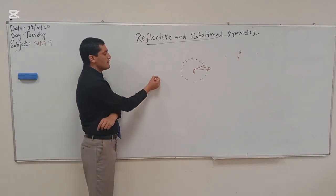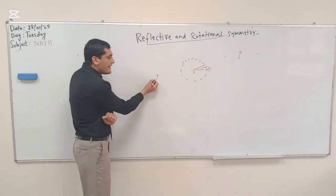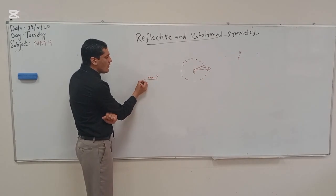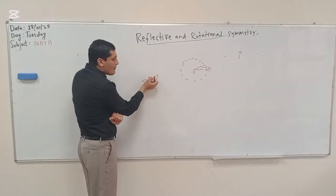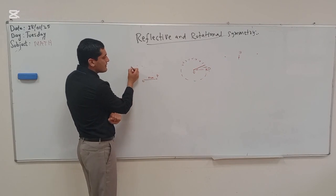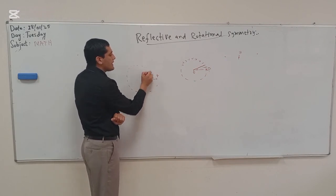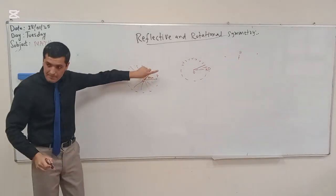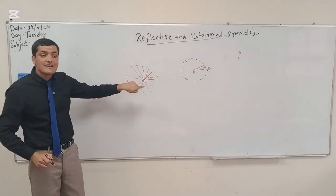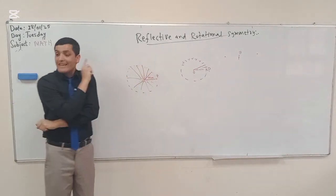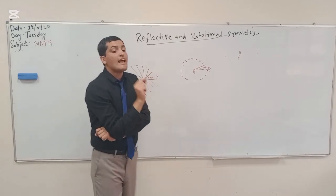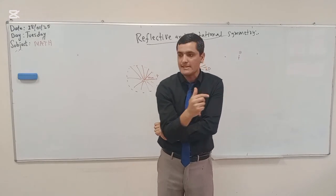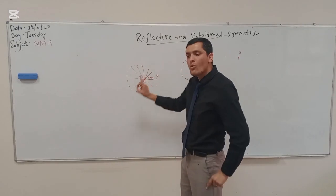Suppose there is a point P at a distance of 5 centimeters from a center O. If I mark every point whose distance from O is 5 centimeters, and P moves in such a way that it follows this circular path, then we say P has rotational motion with respect to O. The distance from O is always the same — 5 centimeters — and this is important.